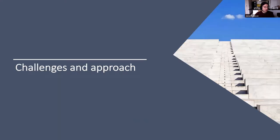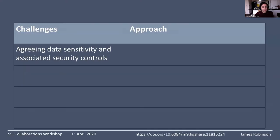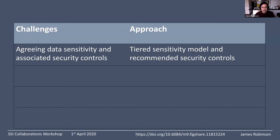I'm going to start by talking about the challenge that we're trying to solve and the approach we've taken. One problem that comes up quite often when dealing with sensitive data is trying to agree what the data sensitivity is and what security controls should be wrapped around that data. Our approach is to come up with a series of tiers of sensitivity — we have five different tiers, each with recommended security controls. That gives you an out-of-the-box subdivision so we can put a project into one of those categories.